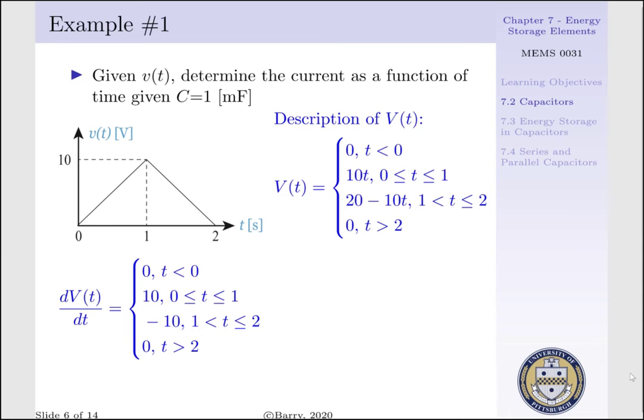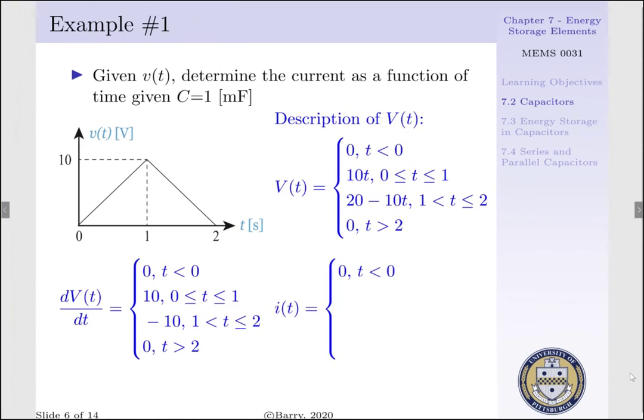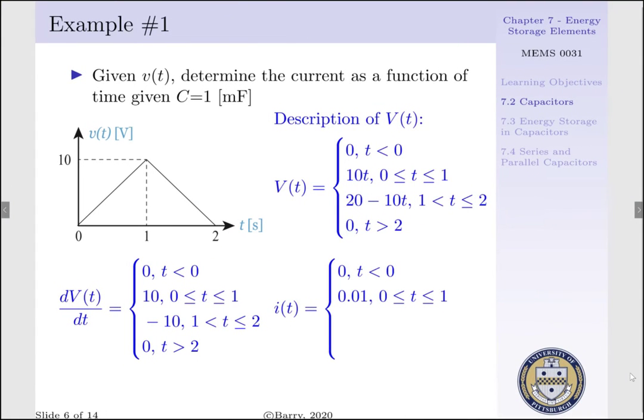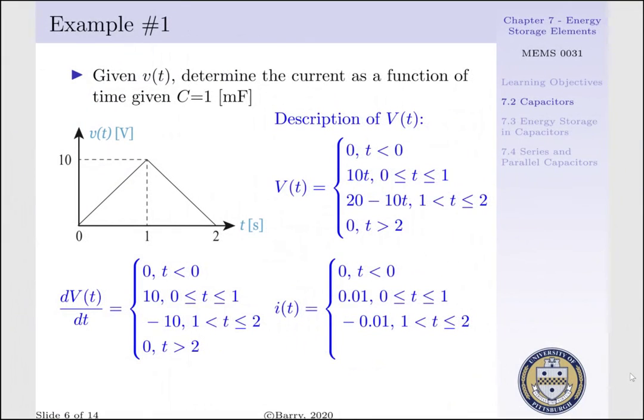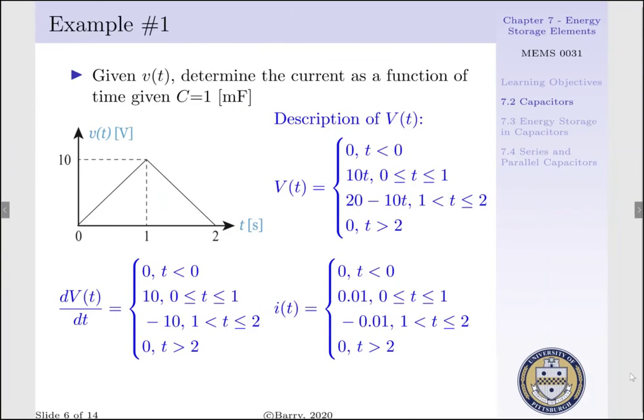Now to determine our current, all we have to do is multiply the time rate of change of voltage by our capacitance. C times 0 is 0, C times 10 is 0.01, C times minus 10 is minus 0.01, and C times 0 is 0.